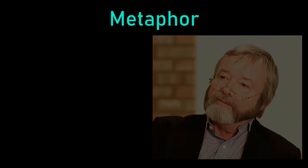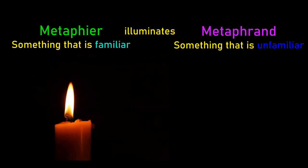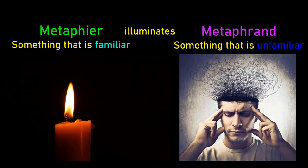We can divide a metaphor into two parts, which Jaynes calls the Metafire — the idea we already know — and the Metafrand — the new idea which becomes illuminated through comparison with the Metafire. Once you begin to notice this, you will see that all language is metaphorical. For example, when I said that the Metafire illuminates the Metafrand, I am using the Metafire of illumination with light to understand the Metafrand of consciousness. Thus, illumination is a metaphor for consciousness, and this works because there is some similarity between light and consciousness, so the idea of light helps us to understand the idea of consciousness.